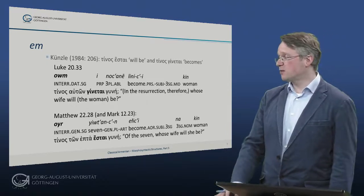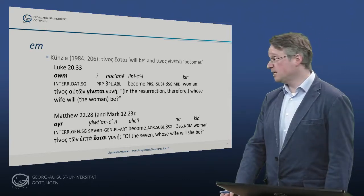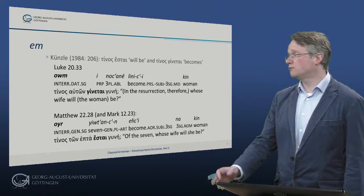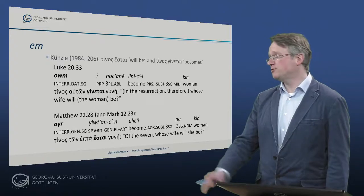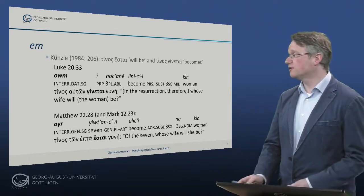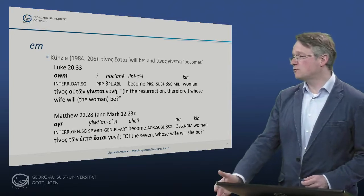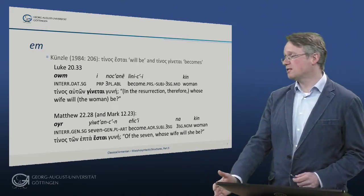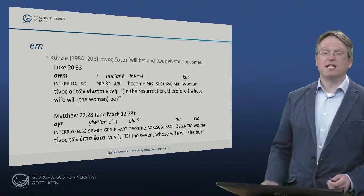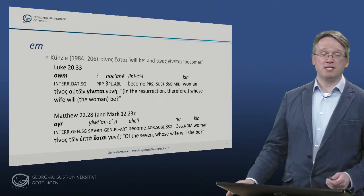In Luke we have 'um innu zane linitzi kin' — 'tenas auton genetai gyne' — in the resurrection, whose wife will the woman be? And in Matthew we have 'Uir juthiansen jiritsi na kin' with the genitive. The dative can be understood as marking the recipient — to whom will she be given — and the genitive as marking the possessor — whose will she be.